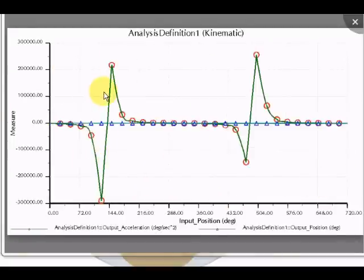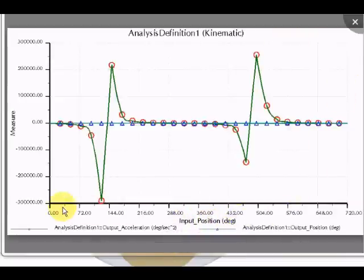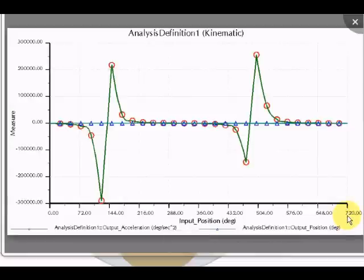The second slide, the second analysis output, we see the input position in degrees. Input position, you should remember that we have 1 is to 2 ratio. So the input is up to 720, that is 2 rotations of the flywheel.